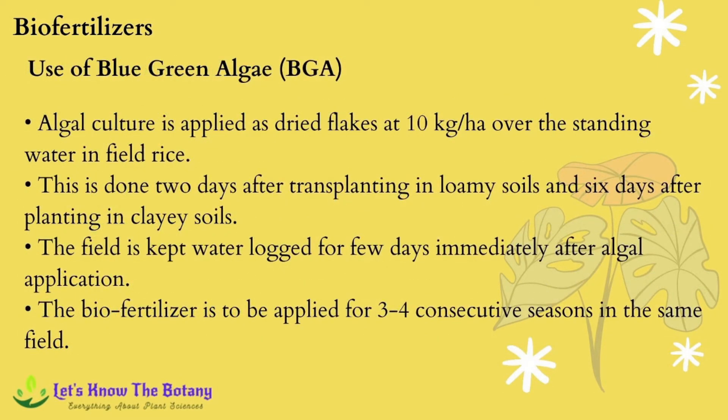Blue green algae cultures are applied as dried flakes at 10 kg per hectare over standing water in field rice, done two days after transplanting in loamy soils and six days after planting in clay soils. The field is kept waterlogged for a few days immediately after algal application. The bio fertilizer should be applied for three to four consecutive seasons in the same field.